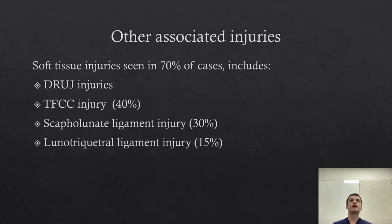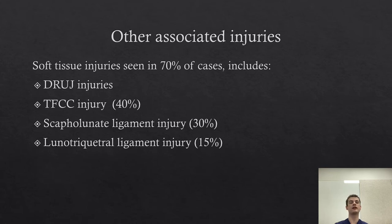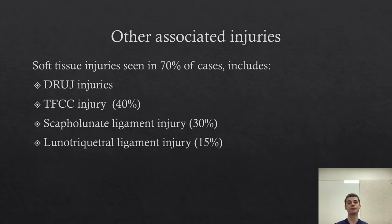Other associated injuries seen with distal radius fractures are very common. Often these soft tissue injuries of the ligamentous complex are seen. Most of the time these are recognised and managed appropriately with immobilisation and have good outcomes. However, if not recognised — or as previously discussed in isolated ligamentous injuries — these can cause chronic pain and issues with the wrist if not managed appropriately.